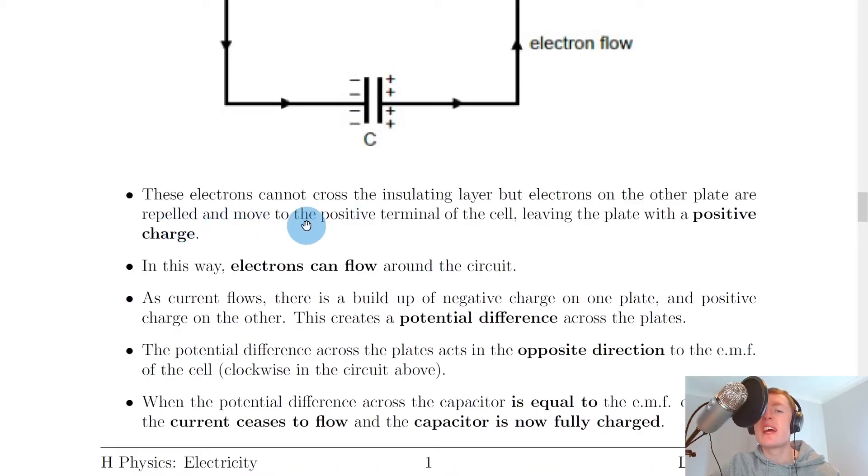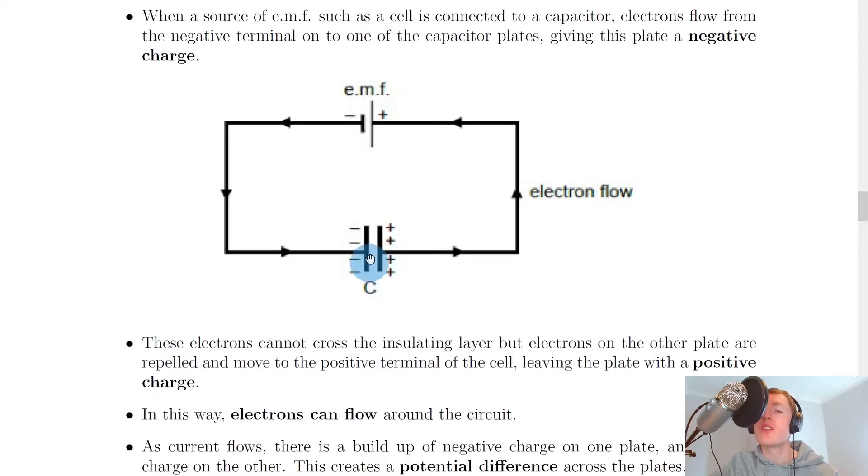These electrons cannot cross the insulating layer, but electrons on the other plate are repelled and moved to the positive terminal of the cell, leaving the plate with a positive charge. The electrons on the right-hand plate of the capacitor are going to be repelled away from the electrons on this side, and they're going to move towards the positive terminal of the battery. Because these electrons have been repelled away, there is a net positive charge existing on this right-hand plate of the capacitor.